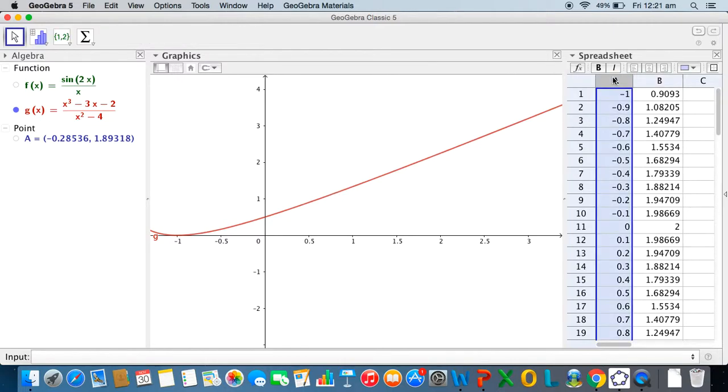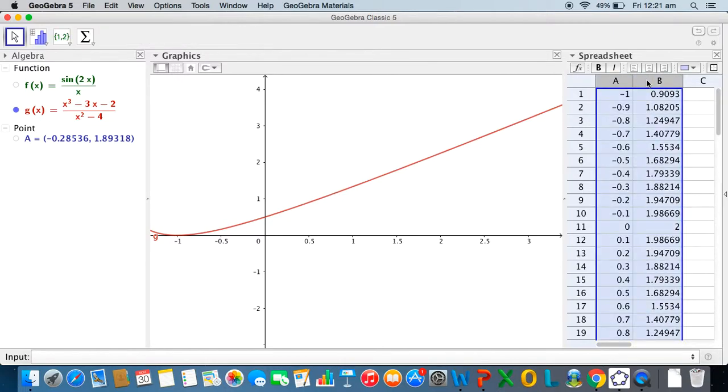In the spreadsheet also I can delete these two columns so I have a clean spreadsheet. In order to see, I want to explore the limit of the function g(x) as x approaches 2.